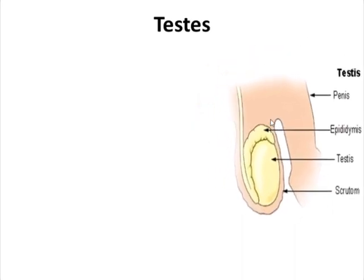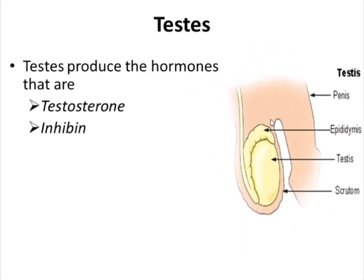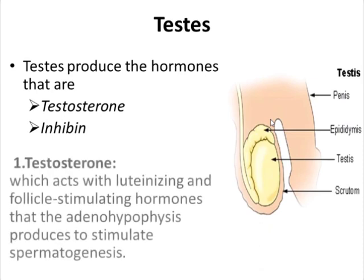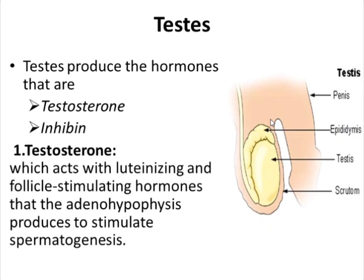First, we will talk about the testes. The testes are the organs covered in the scrotum. They produce the hormones testosterone and inhibin. Testosterone acts with LH and the follicle stimulating hormone (FSH), which are produced by the adenohypophysis, and this helps to stimulate spermatogenesis. So the process of spermatogenesis — that is, the production of sperm — is regulated by the action of testosterone together with LH and FSH hormones.